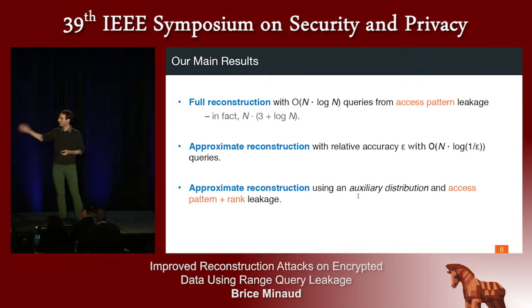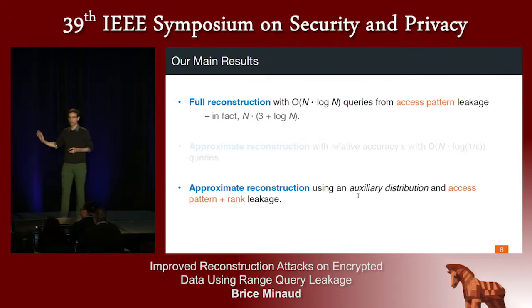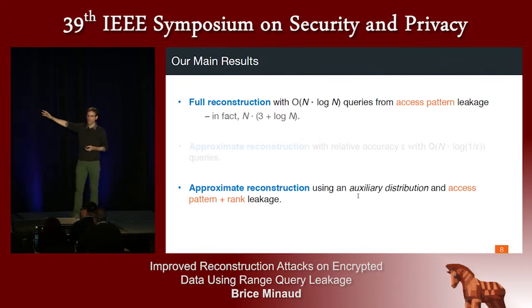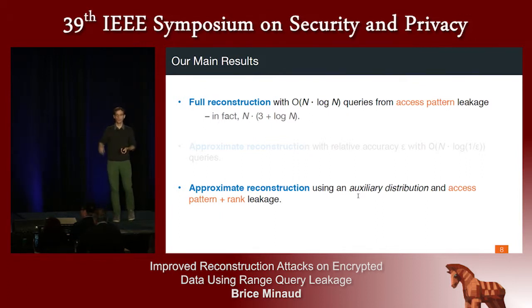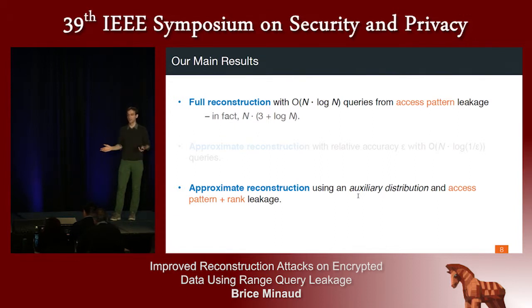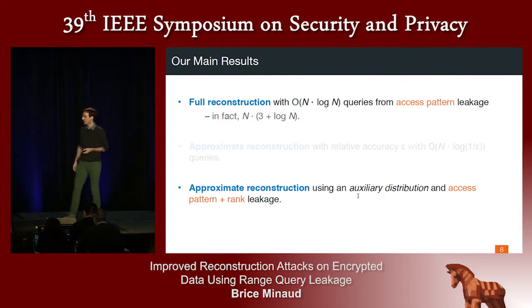We actually present three attacks. I'm going to skip the second one completely in this presentation. Our main result — the first attack — is that you can reconstruct the value of every record in the database in just n log n queries, which is a square-root improvement over prior art, in this very generic setting where only access pattern is visible to the server. I'll then briefly present a second attack that takes advantage of more precise information that could be available to the attacker.